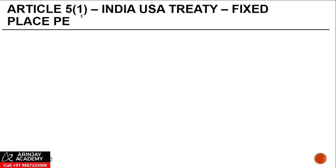Let us look at Article 5, Paragraph 1 of the India-USA Treaty, which deals with a fixed place P.E. This is the most common form of P.E. which has been dealt with for years and decades. In most cases, it is this form of P.E. which was relevant until maybe 10 years ago. But with the change in the business model that is happening, other forms of P.E. have also gained a large amount of recognition.